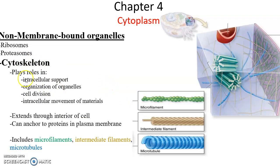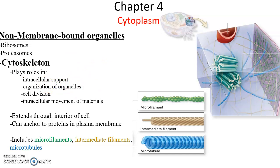The cytoskeleton also lacks a membrane. It is a collection of long protein filaments spread throughout the cytoplasm of the cell. It has many functions: intracellular support, holding organelles in place, organizing the organelles, acting like a highway inside the cell for movement, and it is very important in cell division. The cytoskeleton even gets anchored to the plasma membrane at different points.